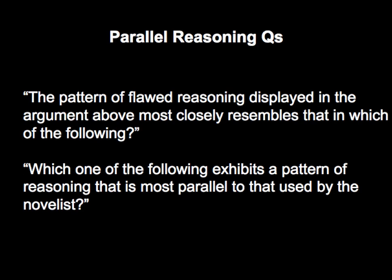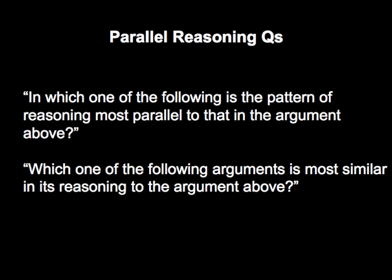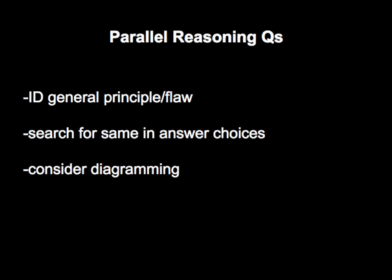Parallel reasoning questions are easy to identify because they're so long — you're reading six stimuli for one correct answer. Question stem keywords include 'pattern,' 'parallel,' 'similar,' 'similar logical structure.' The approach is to determine the method of reasoning, principle, or flaw in the stimulus, form an abstracted version of that reasoning, and look for the same in the answer choices. If there are multiple conditionals, create a formal logic diagram. If these questions appear later in the section, save them for last as they're time-consuming; if earlier, they're likely simpler.